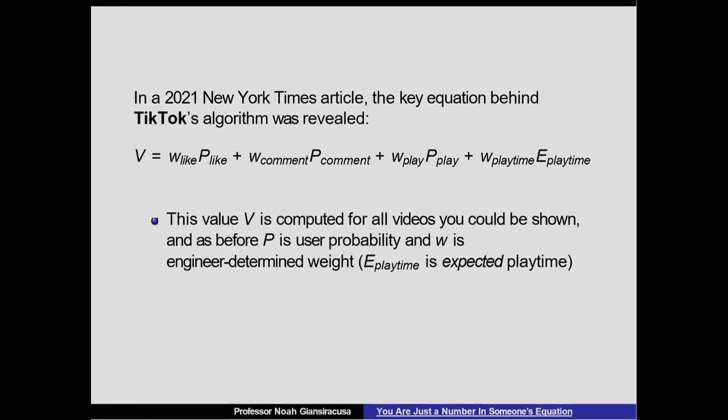The probability you'll comment on a video, and again, a point score. The probability that you'll play the video, and the only slight difference is the last one is they need some kind of score for how much you watch it, so instead of the probability that you'll watch, which is already in the play, it's the expected play time. Anytime you have a random variable, there's something called the expected value, so think of that as your average or basically, it's prediction for how long you'll play the video. Everything has a point score, so I don't know any of the weights for TikTok.